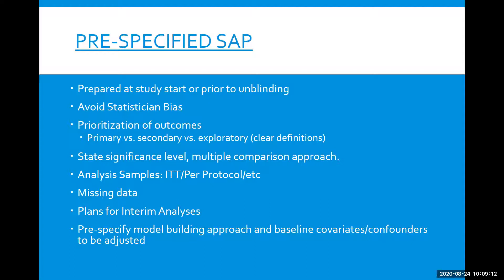The SAP should define what analysis samples you're going to be analyzing — is it going to be the intent-to-treat analysis, will you be doing a per-protocol analysis, et cetera? Those should be very clearly defined. Handling of missing data should be specified, and if there are any plans for interim analyses, those should be described. If there's going to be any model building, the planned approaches should be well-defined, as well as adjustments for baseline covariates.